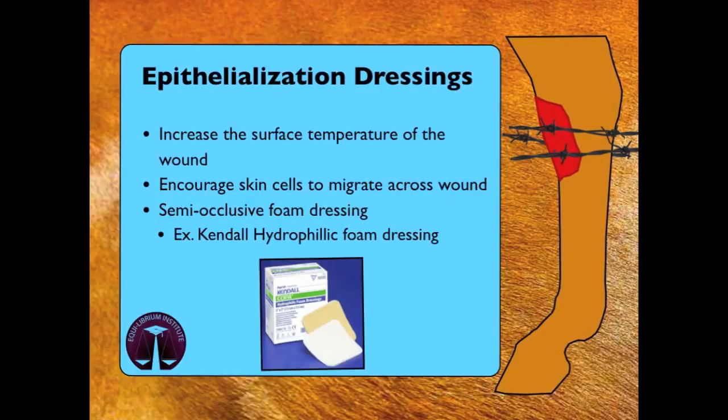The final category of wound dressings stimulates epithelialization by increasing the surface temperature of the wound, encouraging skin cells to migrate from the margins across the healthy granulation bed. These types of dressings are usually made out of semi-occlusive foam. Hopefully by now you're realizing that managing a wound is more complicated than just smearing on whatever ointment is lying around.